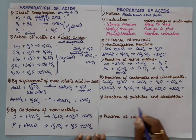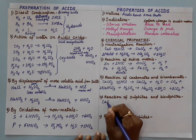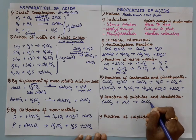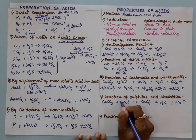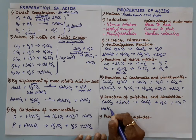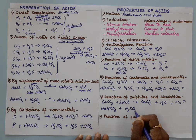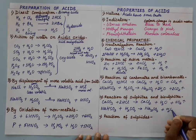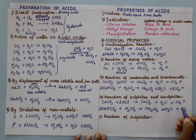Reaction of sulfites and bisulfites: any metal sulfite when reacts with acid gives the corresponding salt plus water plus sulfur dioxide. Sulfite will always give sulfur dioxide. Metal bisulfite when reacts with acid also gives the corresponding salt plus water plus sulfur dioxide. For Na₂, put 2 here to balance.